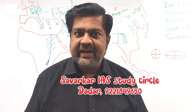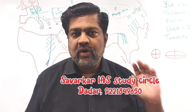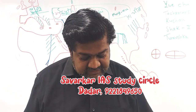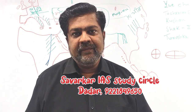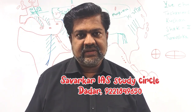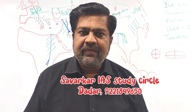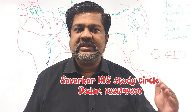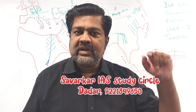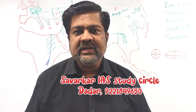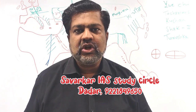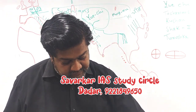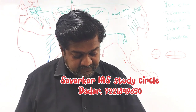Question ten: Lok Sabha is having a maximum of 550 elected members — this is true. The maximum capacity of Lok Sabha is 550, though it is not necessary that every Lok Sabha has exactly 550 members. Rajya Sabha is a permanent house of Parliament — this is also true. After every two years, one-third of Rajya Sabha members retire and are replaced, maintaining continuity. Unlike Lok Sabha, Rajya Sabha cannot be dissolved, so it is a permanent house. Both statements are true — answer is option C.